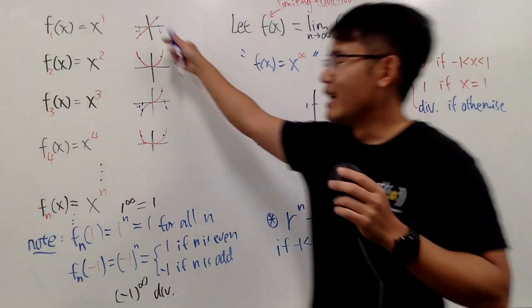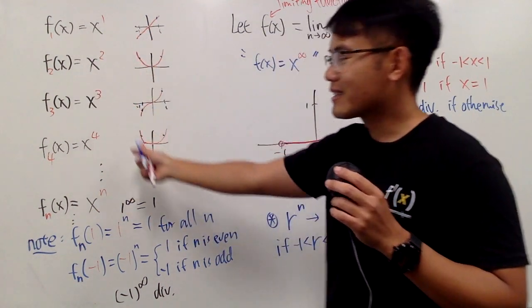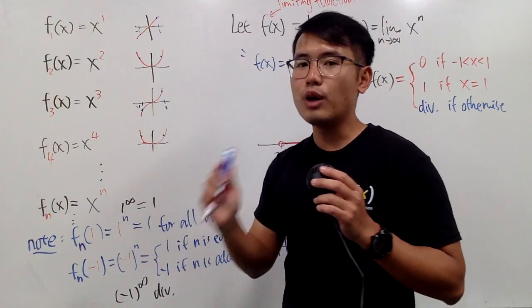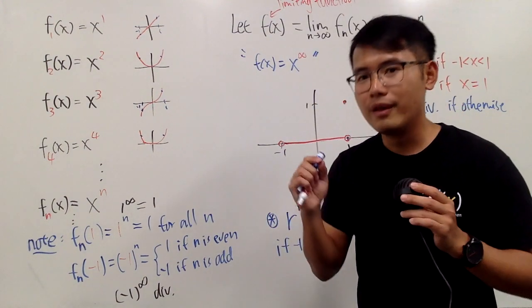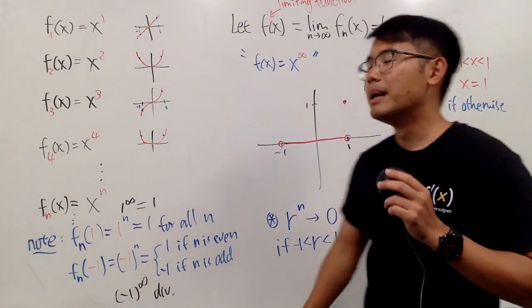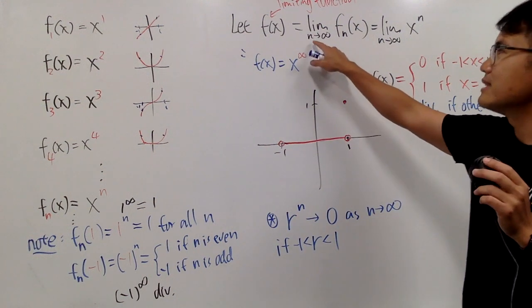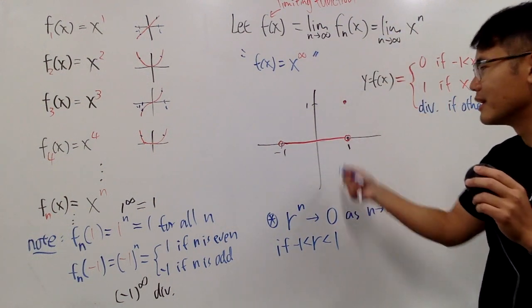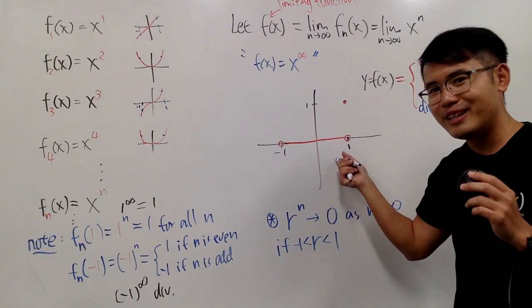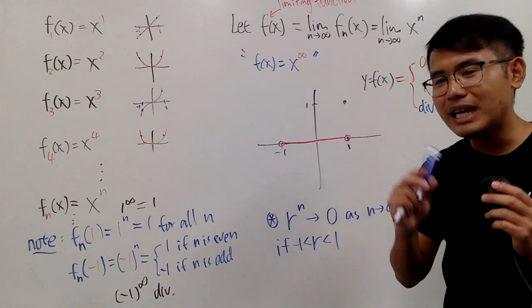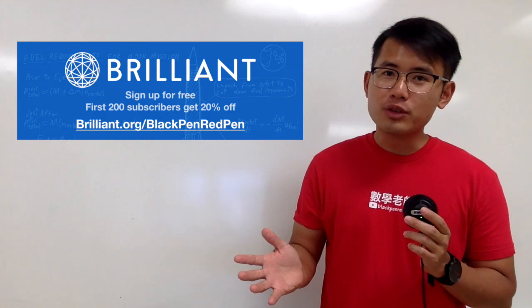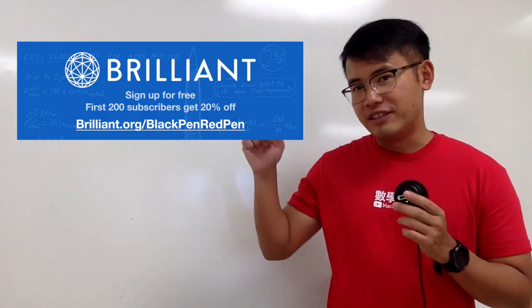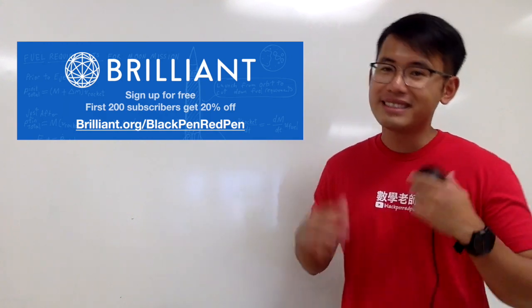As you can see, all of these are continuous functions. In fact, x to the nth power is a continuous function when n is a positive whole number and it's finite. But the moment you take the limit as n goes to infinity, the limiting function is no longer continuous. So this is an example of why we really have to be careful when dealing with infinity. Thank you guys so much for watching the video. If you have any questions or comments, just leave them down below, and be sure to check out Brilliant.org.